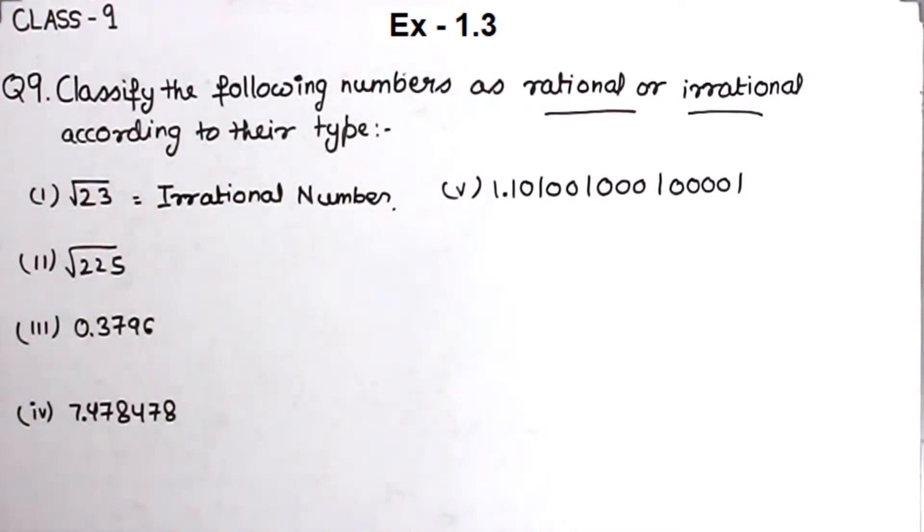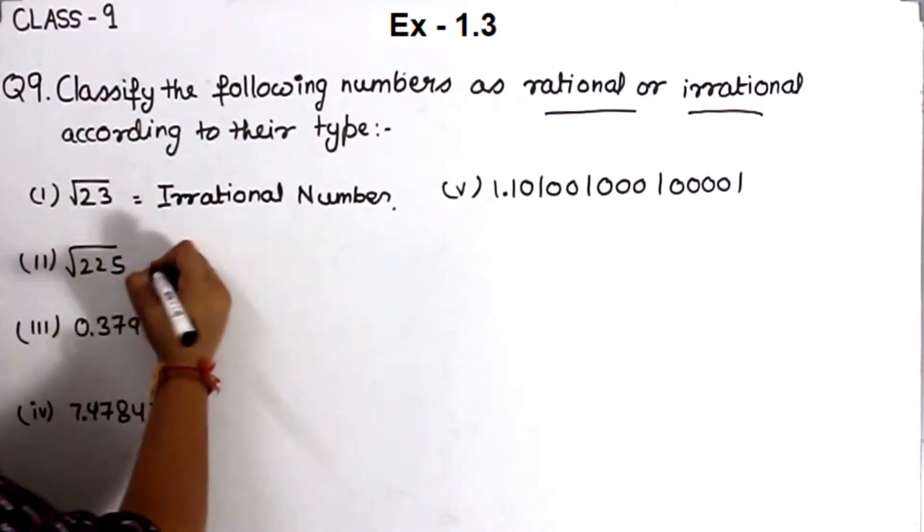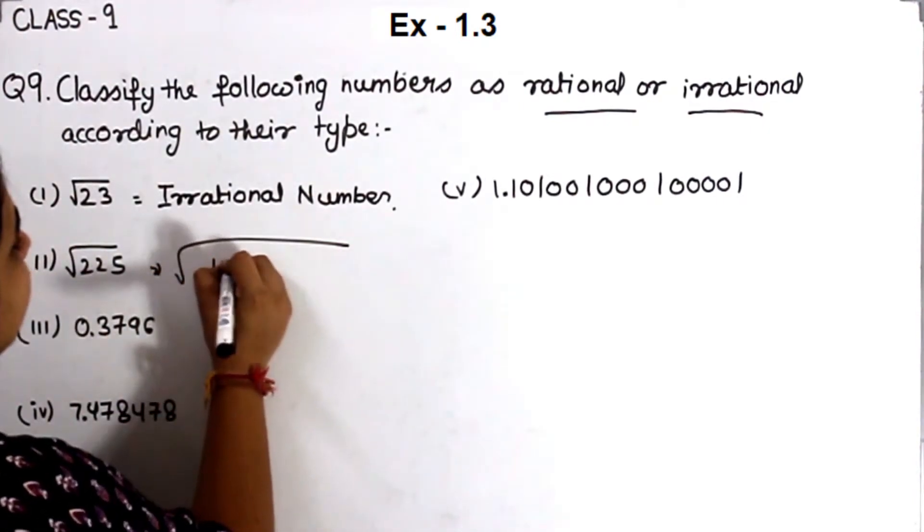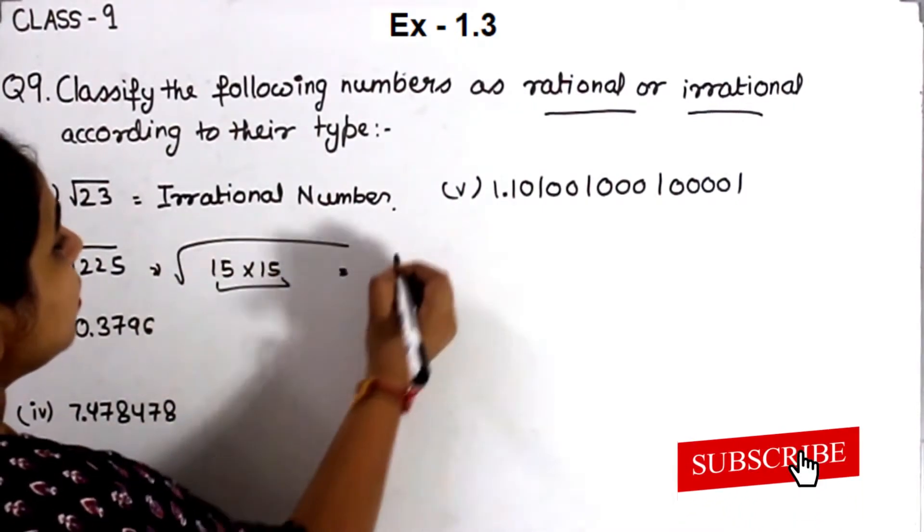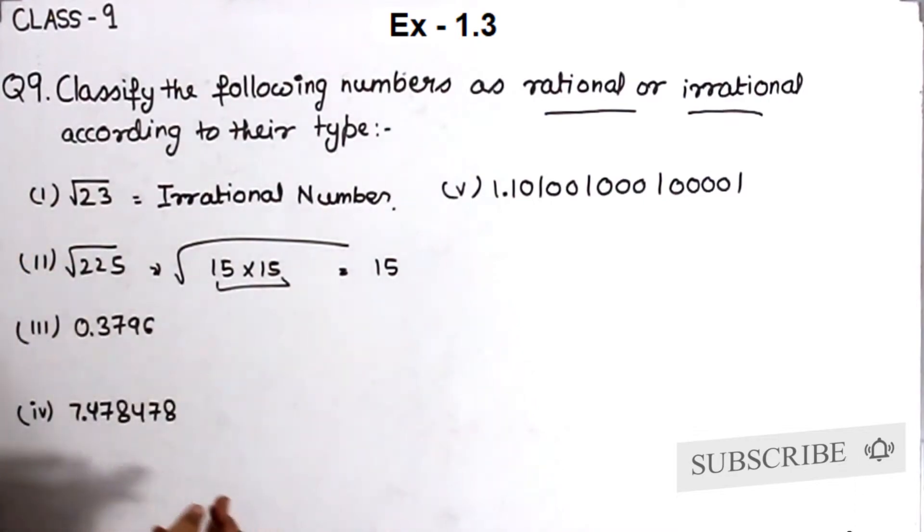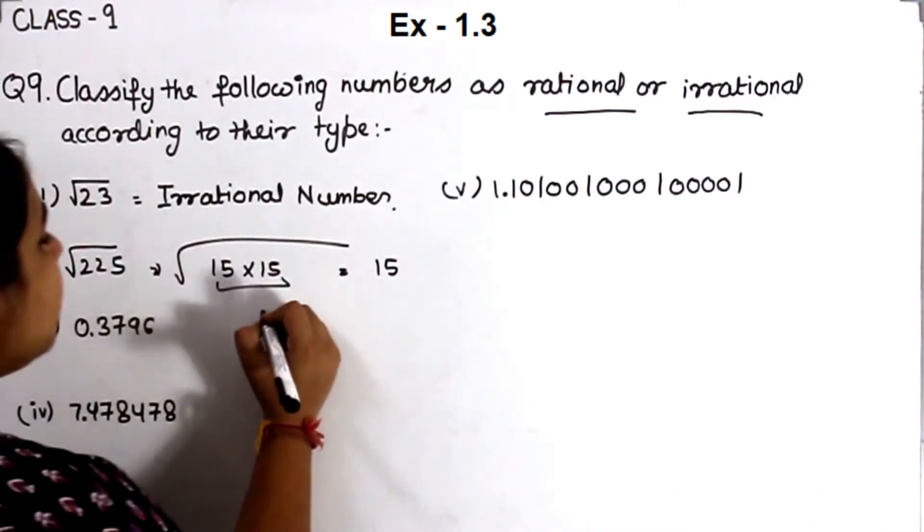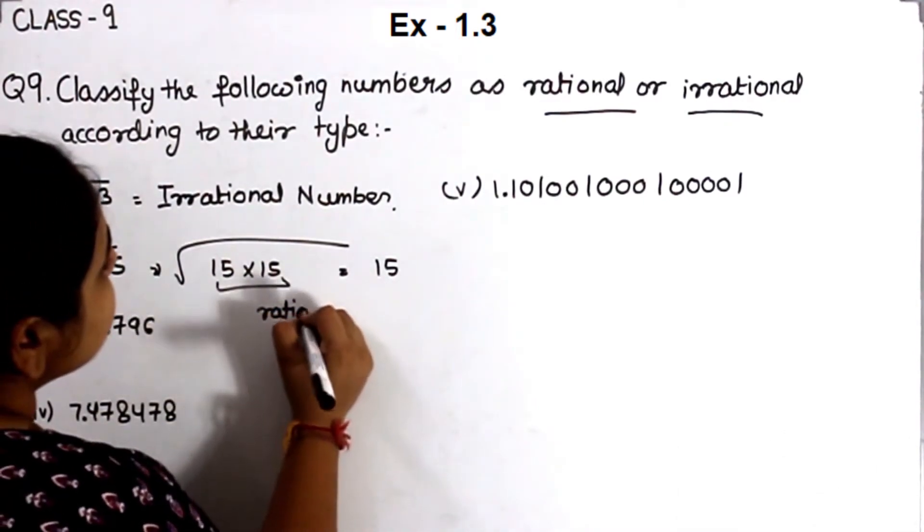Now the second one, root 2.25. Root 2.25 is a perfect square. It is the square of 15 outside 15, and 15 is a rational number.